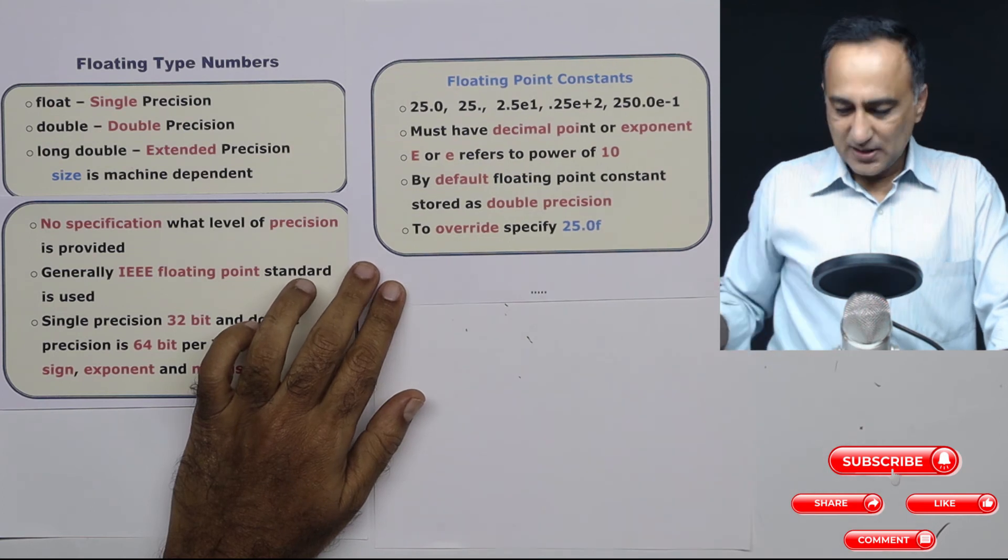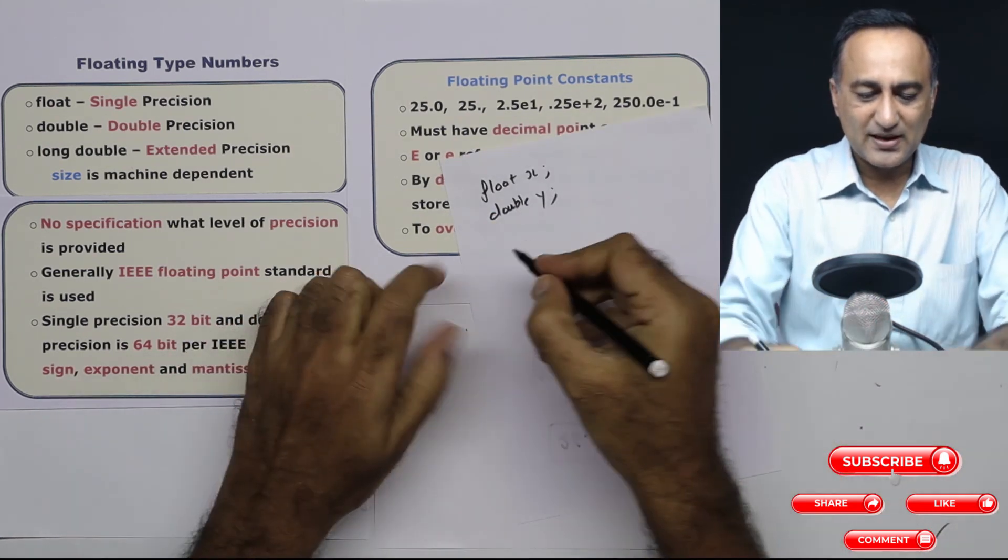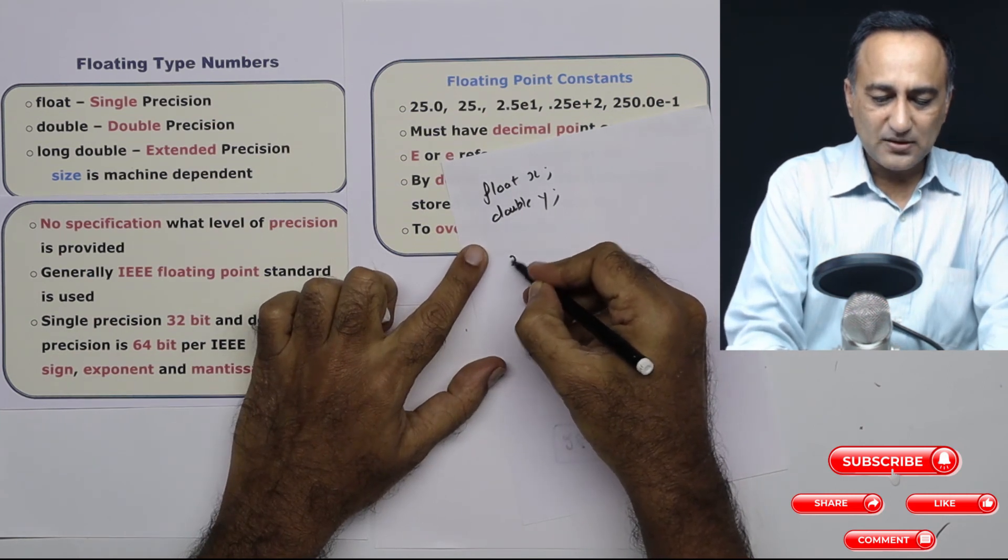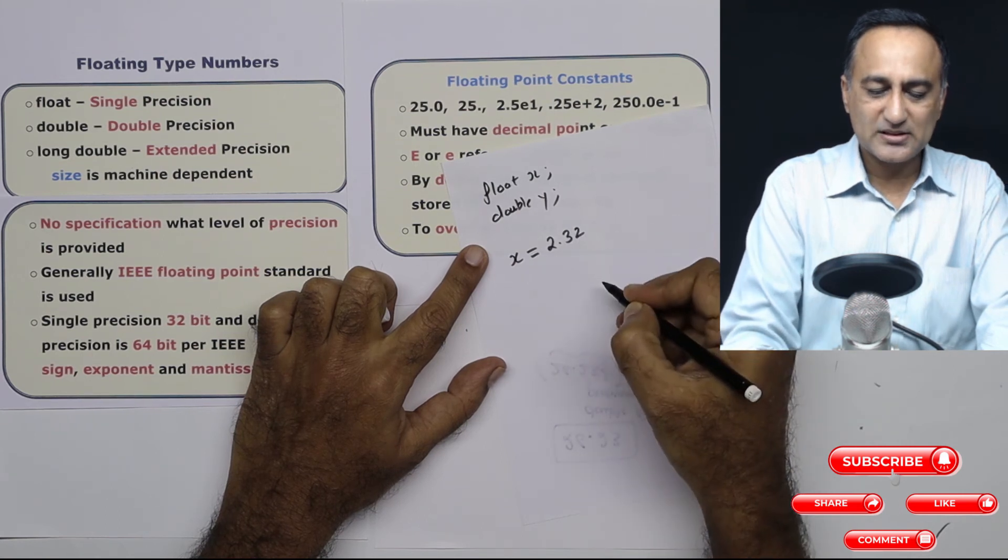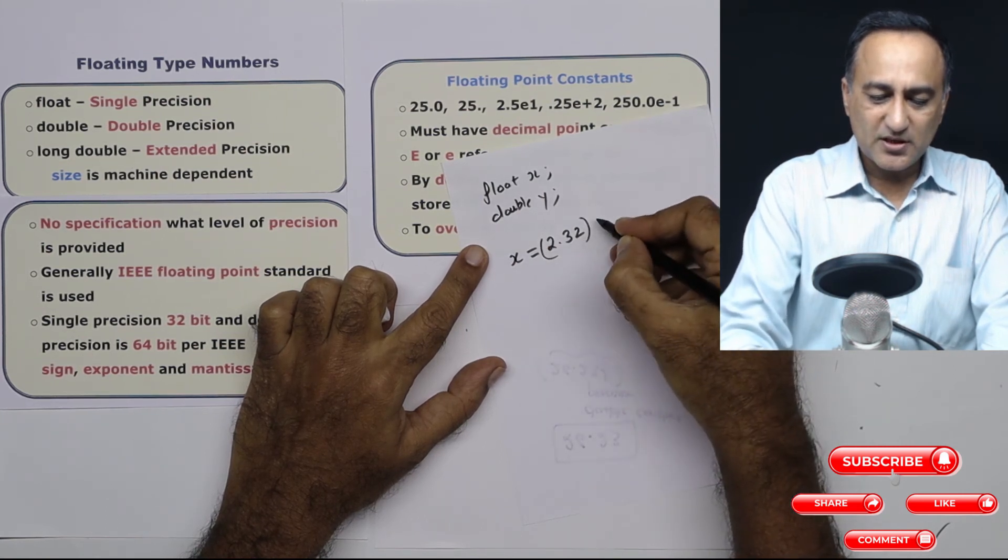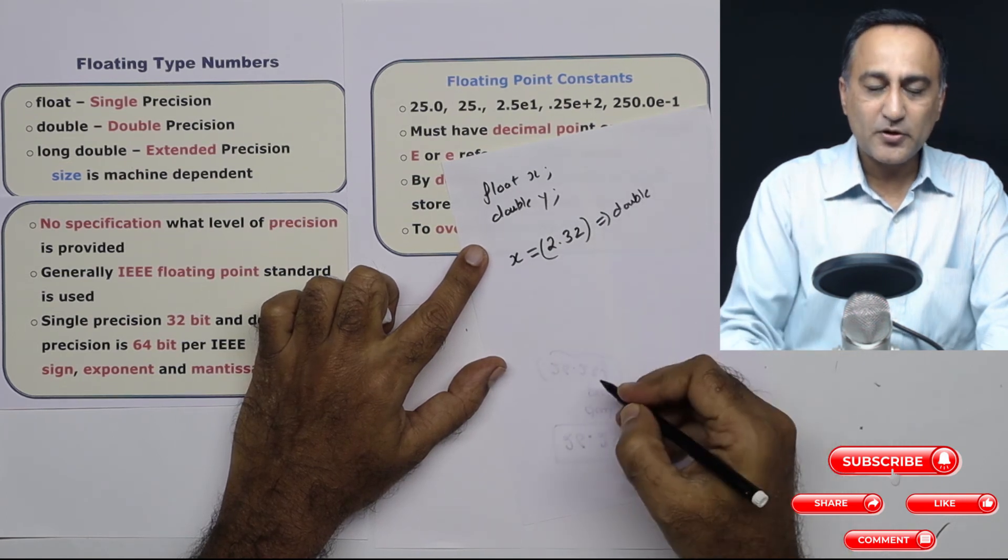Now suppose I declare a floating point constant. Okay, suppose I do something like this. If I say x is assigned the value 2.32 like this, this constant by default, C will treat it as a double type of variable.